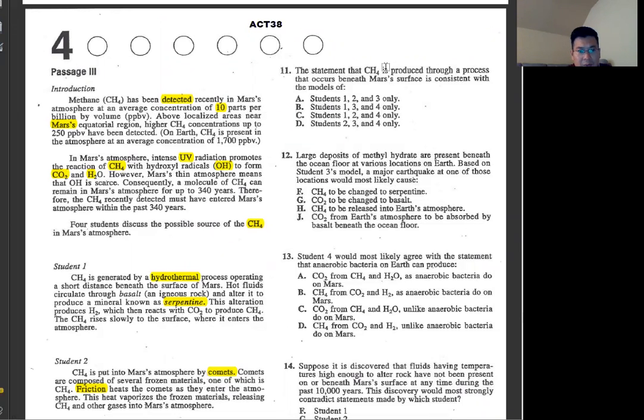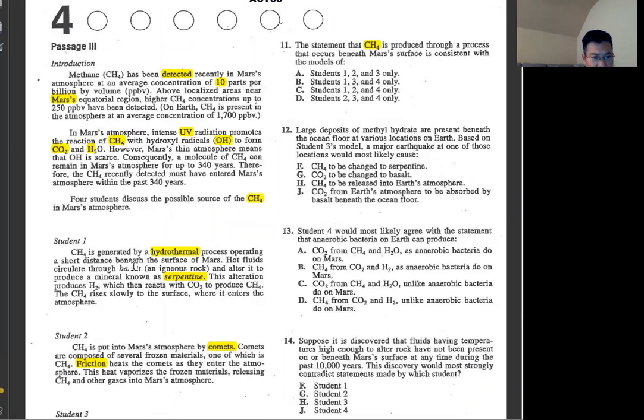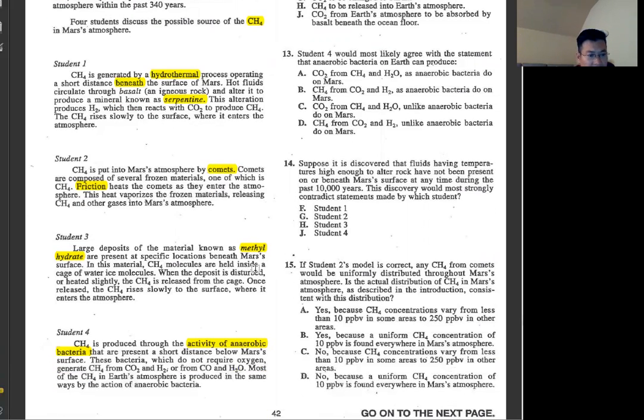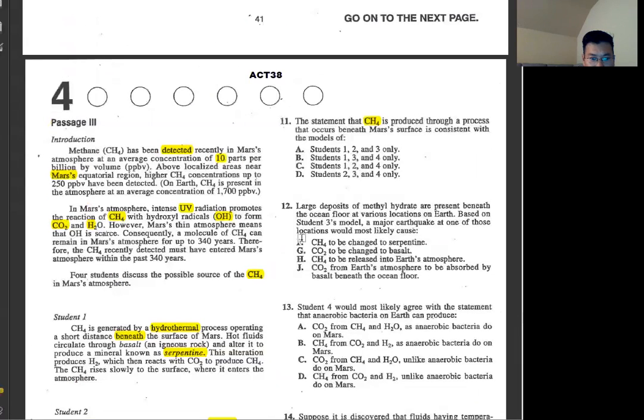Methane has been detected recently in Mars atmosphere, average of 10 parts per billion. Mars atmosphere has intense UV radiation that promotes reactions of CH4 with OH to form CO2 and H2O. Four students discuss possible sources of CH4 for Mars atmosphere. CH4 generated by hydrothermal process operating short distance beneath the surface. The hydrothermal process involves salt and serpentine. Student two says brought to Mars by comets with friction heat. Student three says large deposit of material known as methyl hydrate, molecules inside a cage of water. Student four says produced through the activity of anaerobic bacteria.